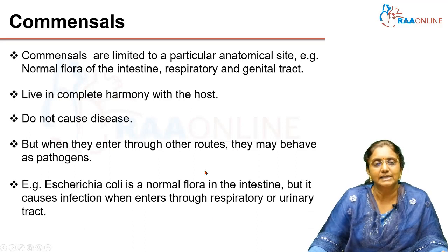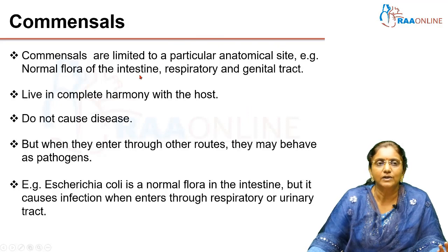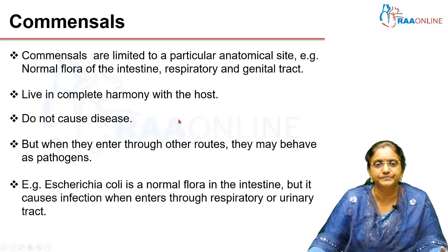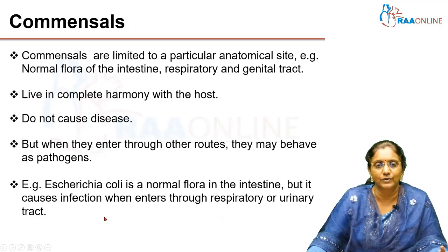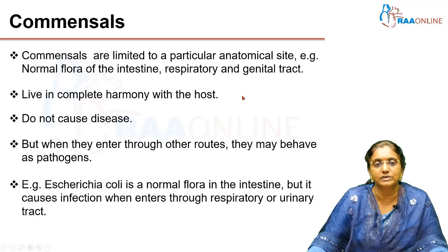Another group of organisms are commensals. Commensalism means 'eating at the same table.' These organisms are present at specific anatomical sites — for example, the normal flora of the intestine differs from that of the respiratory or genital tract. They live in harmony with the host and don't cause disease. However, if they enter other organ systems — for example, E. coli is a normal flora of the gastrointestinal tract, but if it enters the respiratory or urinary tract, it can become a pathogen.